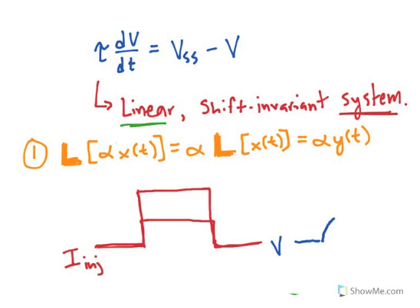And when the current step is off, it will approach back down to its original resting membrane potential. And if you double the amount of current, it will exactly double in its amplitude.